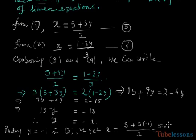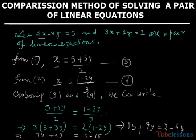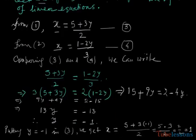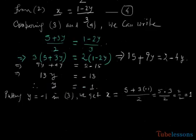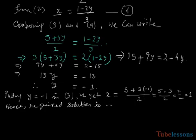So 5 minus 3 by 2 is 2 by 2 equals 1. Hence, x equals 1. So the required solution is x equals 1 and y equals minus 1.